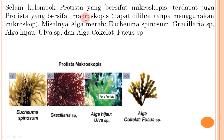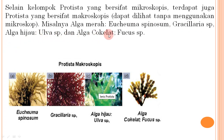Selain yang bersifat mikroskopis, terdapat juga protista yang bersifat makroskopis dan dapat dilihat tanpa mikroskop, misalnya alga merah (Eucheuma spinosum, Gracilaria sp), alga hijau (Ulva sp), dan alga coklat (Fucus sp).